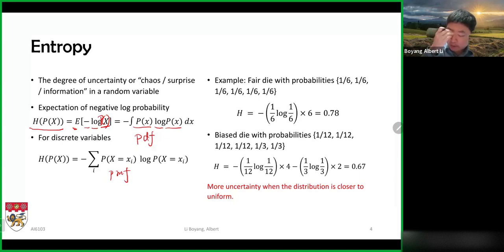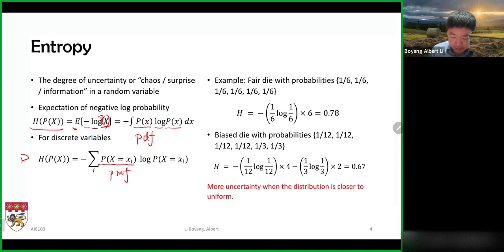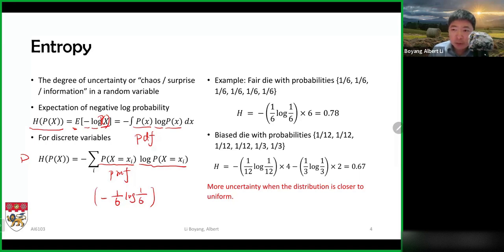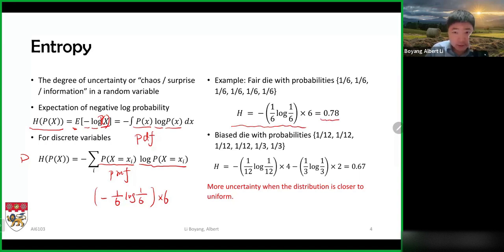Let's look at some examples. The first is a fair die, where the probability for each of the six sides is the same — one over six. To compute the entropy, we take the probability that x takes on side one, which is one over six, compute the logarithm of one over six with a negative sign, and multiply by six since there are six sides. If you punch the numbers into the computer, it gives you 0.78.